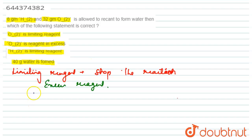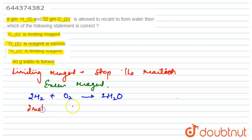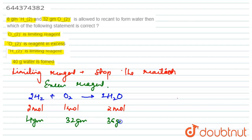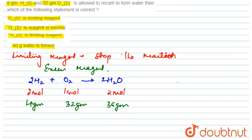The reaction given is 8 grams of H₂ and O₂ allowed to react to form water. The complete balanced equation is: 2H₂ + O₂ → 2H₂O. In this balanced equation there are 2 moles of H₂, 1 mole of O₂, and 2 moles of H₂O, corresponding to 4 grams of H₂ reacting with 32 grams of O₂ to give 36 grams of H₂O.